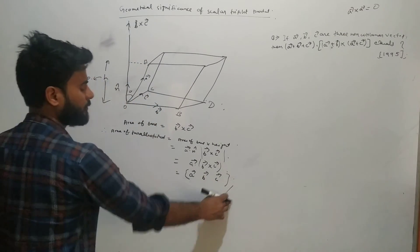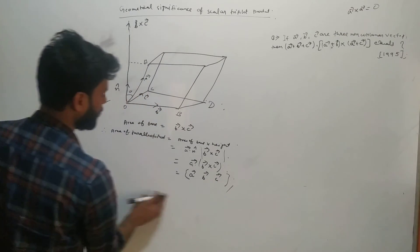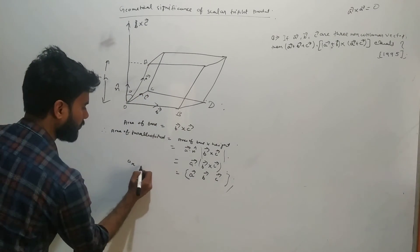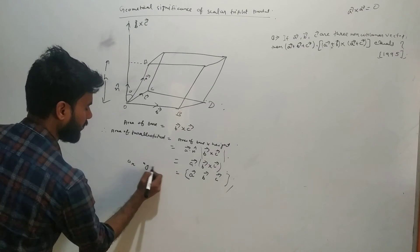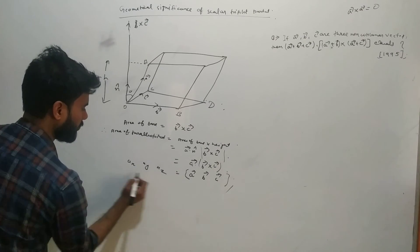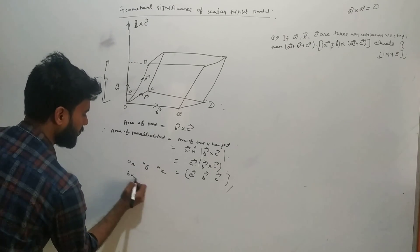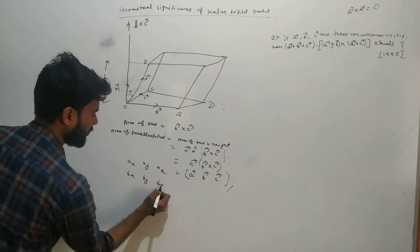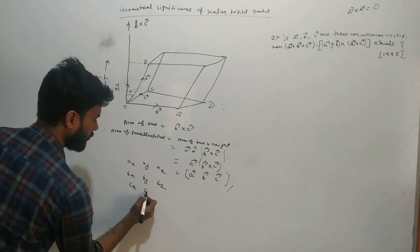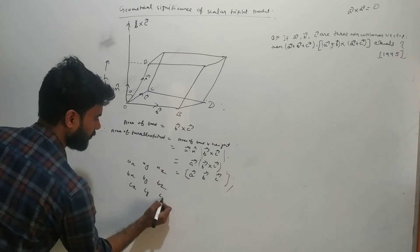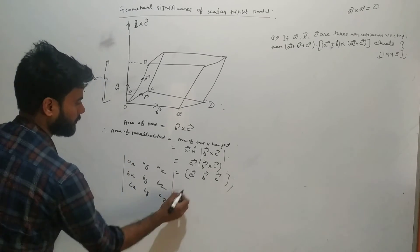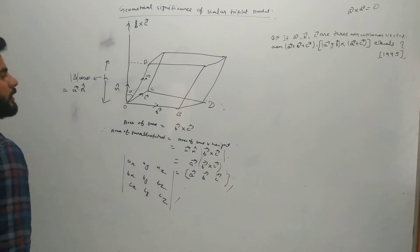This scalar triple product [a, b, c] can be represented in the form of a determinant, with components ax, ay, az in the first row; bx, by, bz in the second row; and cx, cy, cz in the third row.